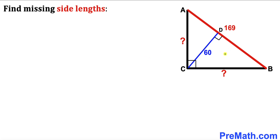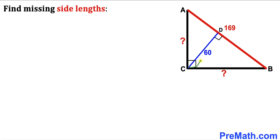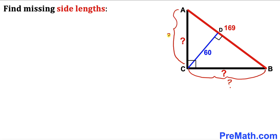Welcome to pre-math. In this video we have got this right triangle ABC along with this perpendicular CD, as you can see in this diagram, such that this side length AB of this triangle is 169 units whereas this perpendicular CD is 60 units. Our task is to find the missing side lengths BC and AC.